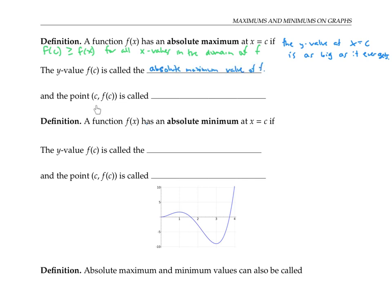And the point with an x value and a y value given is called an absolute maximum point. If I have a graph of a function, then the absolute maximum value f of c is the highest value that function ever achieves, and the absolute maximum point is the point where it achieves that value. Now it's possible for a function to have more than one absolute maximum point if there happens to be a tie where that highest value is achieved. But a function can only have at most one absolute maximum value.